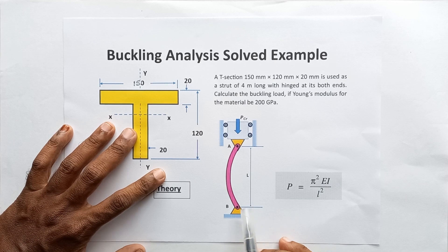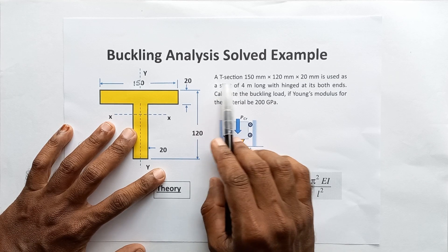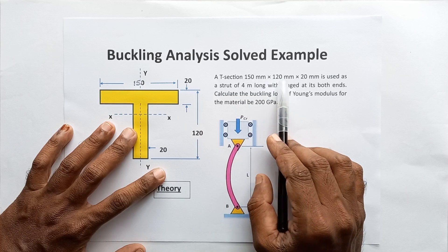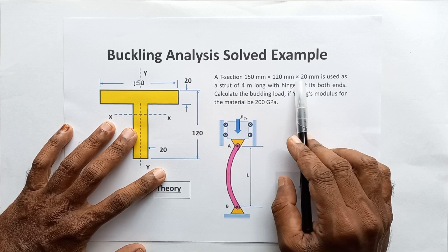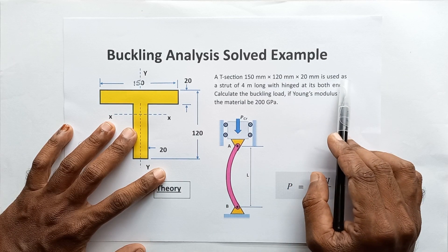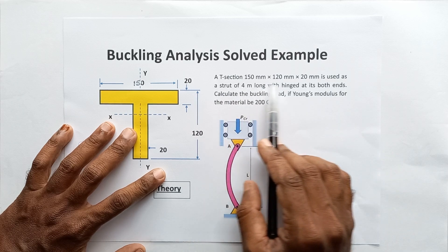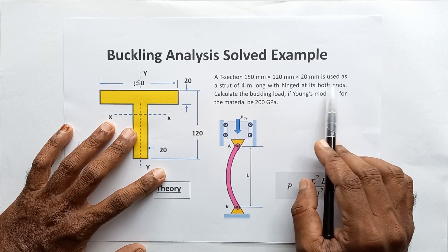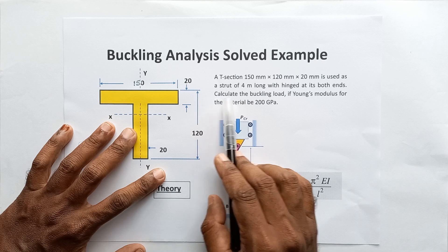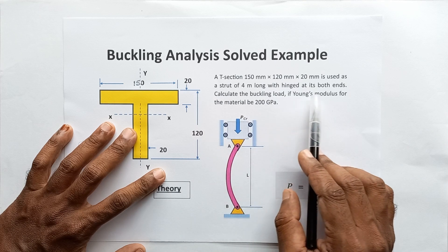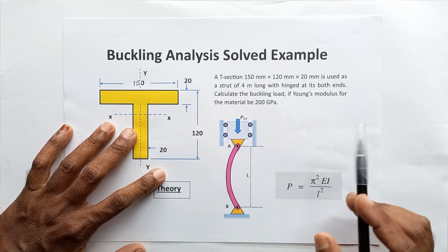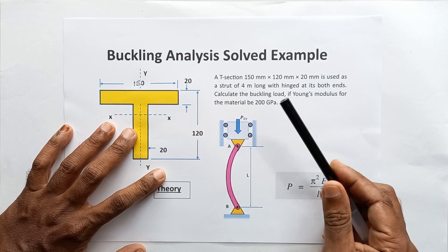In this video we are going to discuss this problem: a T-section 150mm × 120mm × 20mm is used as a strut of four meter length, hinged at both ends. Calculate the buckling load if Young's modulus for the material is 200 gigapascals.